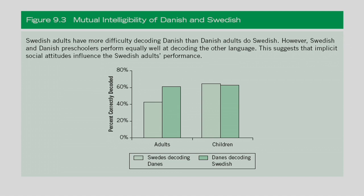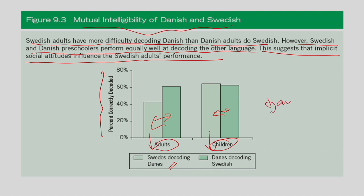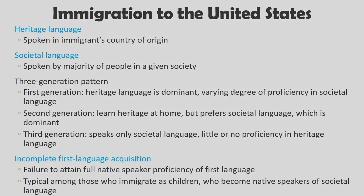A good example of mutual intelligibility involves Danish and Swedish. Swedish adults have more difficulty decoding Danish than Danish adults do decoding Swedish, because Danes move to Sweden for education and work and thus need to learn Swedish. However, Swedish and Danish preschoolers perform equally well in decoding the other language, suggesting that implicit social attitudes influence Swedish adults' performance rather than linguistic difficulty alone.